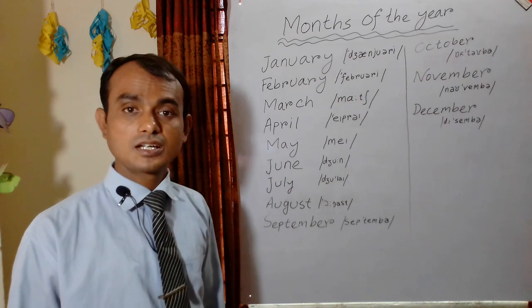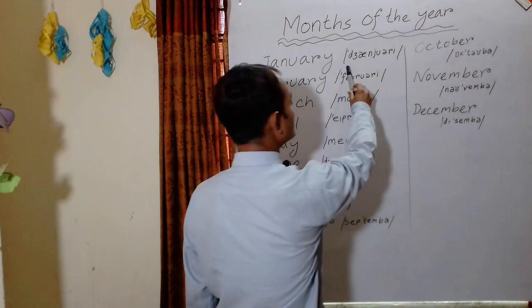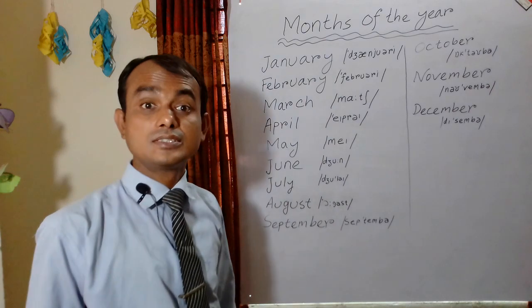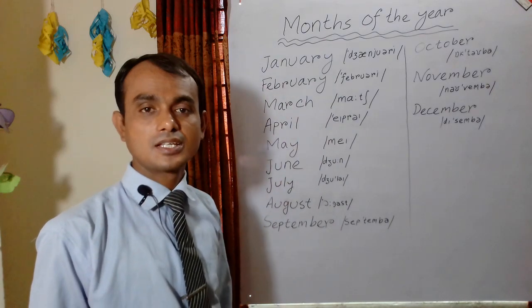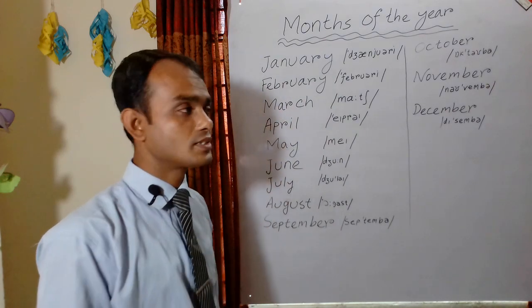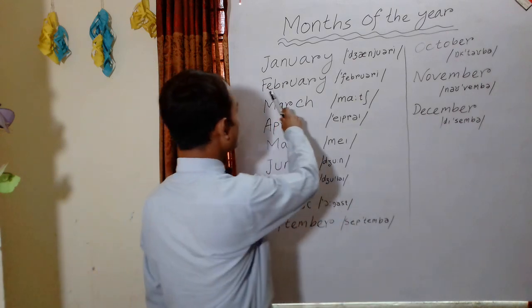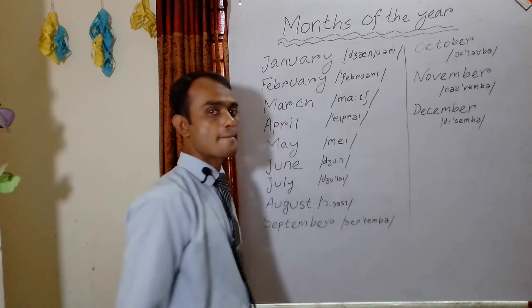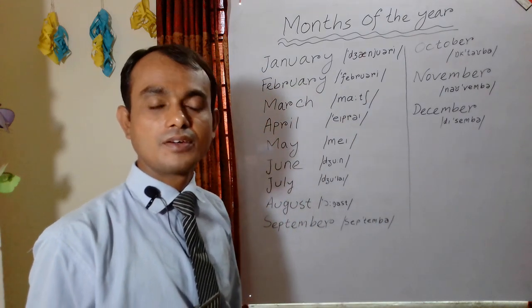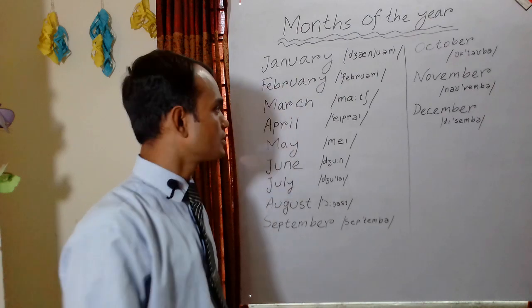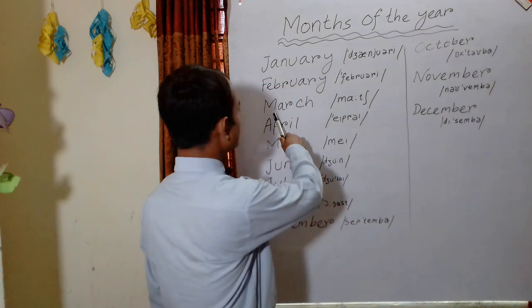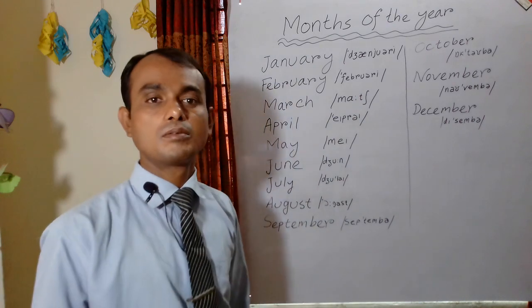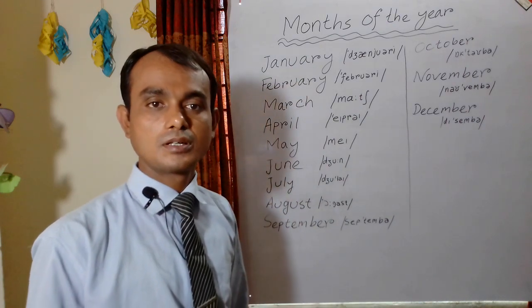The first month of the year is January. January. The second one: February. February. The next: March. March.